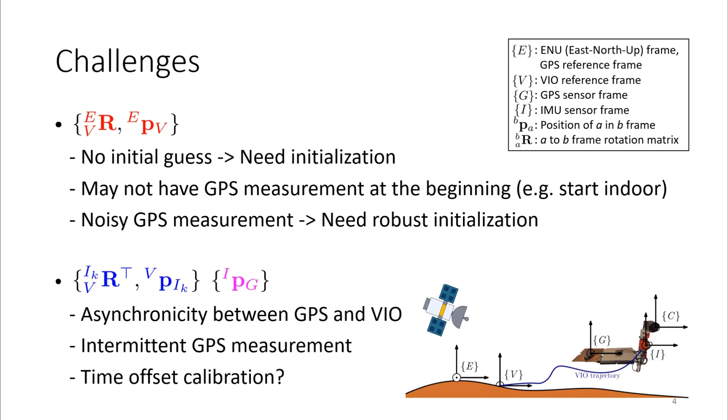So this requires an initialization procedure, which is finding the values from no initial guesses. Also, the system may not have GPS measurement at the beginning, such as starting from indoors. In order to achieve seamless localization, we want the system to run locally and perform global localization after GPS-VIO is initialized.